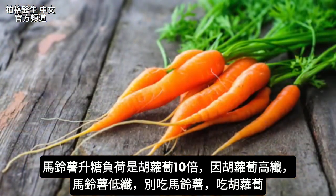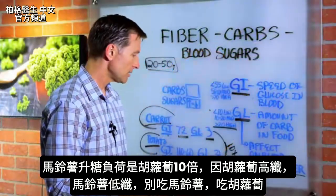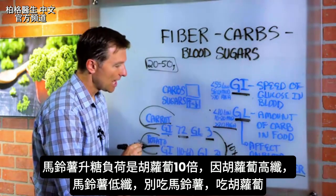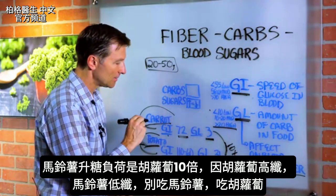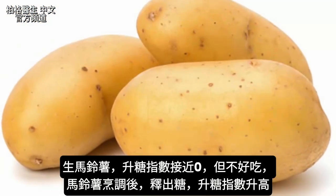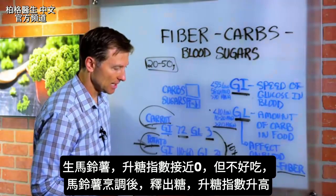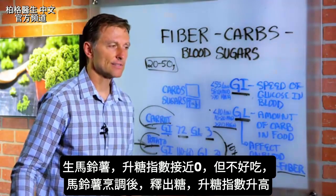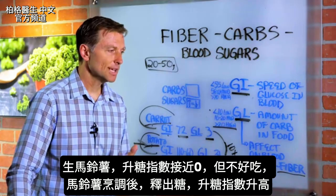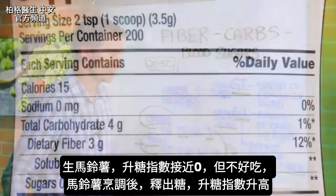That has to do with the amount of fiber in carrots — there's not a lot of fiber in potatoes. Therefore, you want to stay away from potatoes; carrots are much safer. However, you could potentially consume a raw potato, which is close to zero on the glycemic index, but it's not very appetizing. As you cook them, you release the sugars and they become higher and higher on the glycemic index.